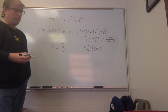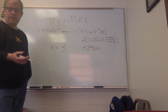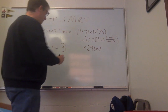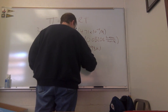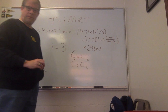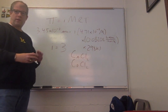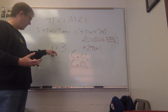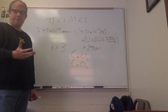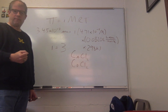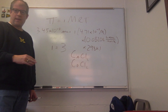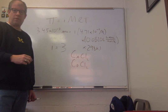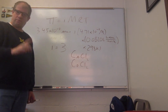A Van't Hoff factor of 3 could correspond to something like calcium chloride or cobalt(II) chloride — a compound that dissociates into three ions in solution. The Van't Hoff factor is the number of ions produced when an ionic compound dissociates in solution. I'll pause while I put up the next problem to save time and hopefully allow a successful upload.